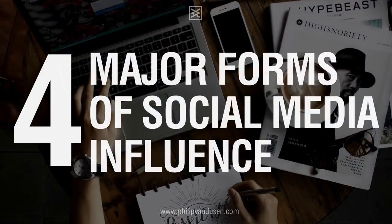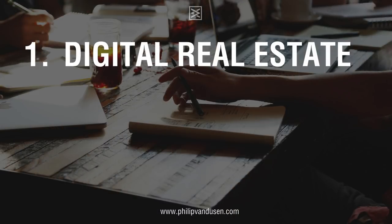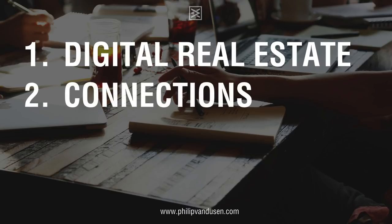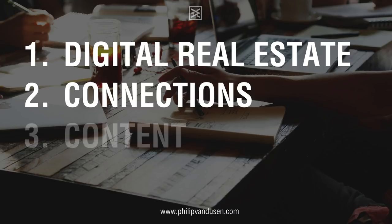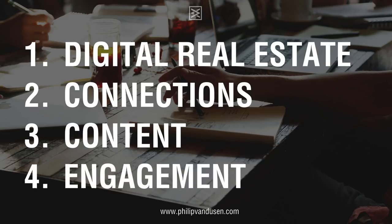Welcome back. In this video I want to talk about how to build a social media marketing plan. There are four major forms of social media influence: number one is digital real estate — how pervasive you are in the digital sphere; number two is connection — people and followers; number three is content — what you put out and what value you deliver; and number four is engagement — how you interact with your audience.